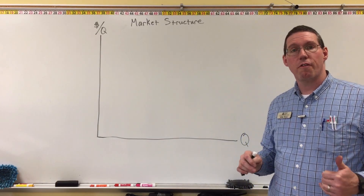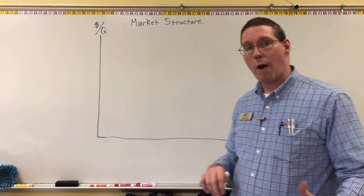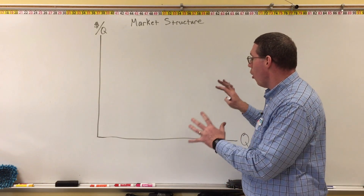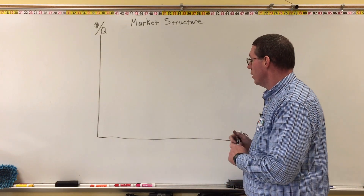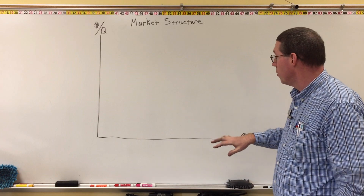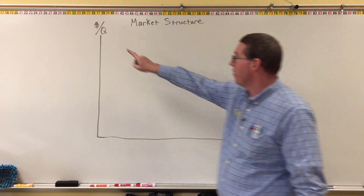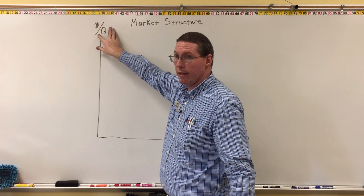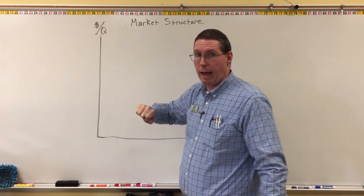Let's take everything that we've learned so far in this lesson and wrap it up by putting all five of those curves on one coordinate plane. Remember, we've got quantity on our horizontal axis and dollars per unit on the vertical axis.